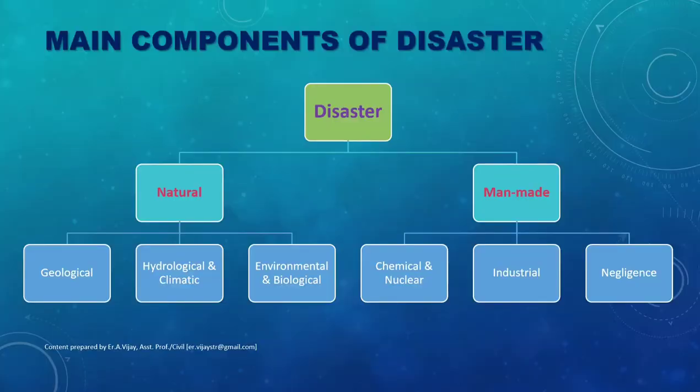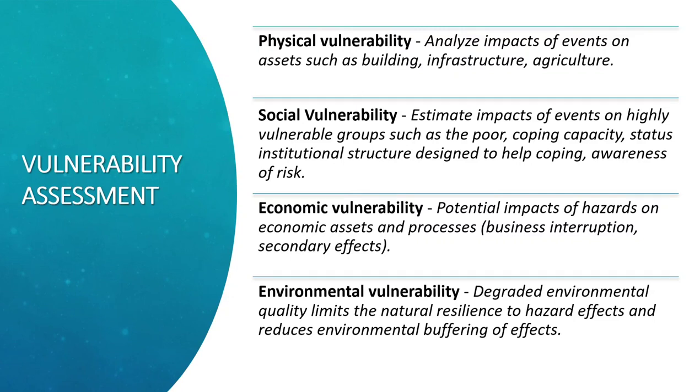The main components of disasters are widely classified into two different categories: natural and man-made. Natural disasters can be further sub-classified as geological, hydrological or climatical, and environmental or biological. Man-made disasters can be sub-classified as chemical or nuclear, and industrial accidents or any other accident caused due to negligence. Vulnerability again has different categories such as economic vulnerability, physical vulnerability, social vulnerability and environmental vulnerability.